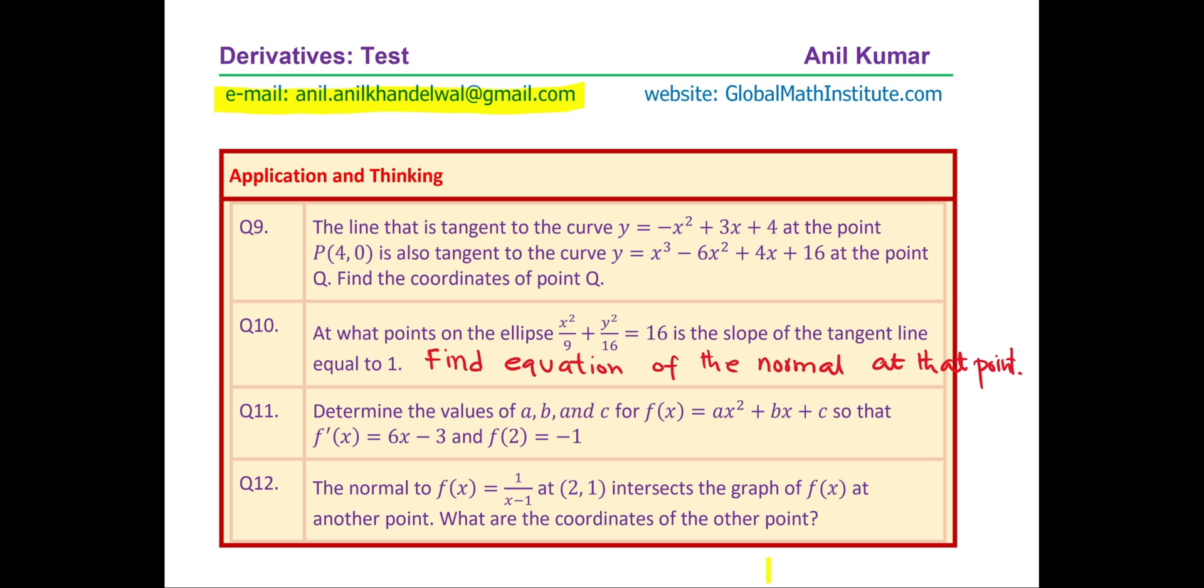Question eleven. Determine the values of a, b, and c for f(x) equals ax square plus bx plus c so that f prime x or the derivative of the function is 6x minus 3 and f(2) equals minus 1. Very interesting question. You can do the backward calculation. We have given you the derivative. You need to find the function itself.